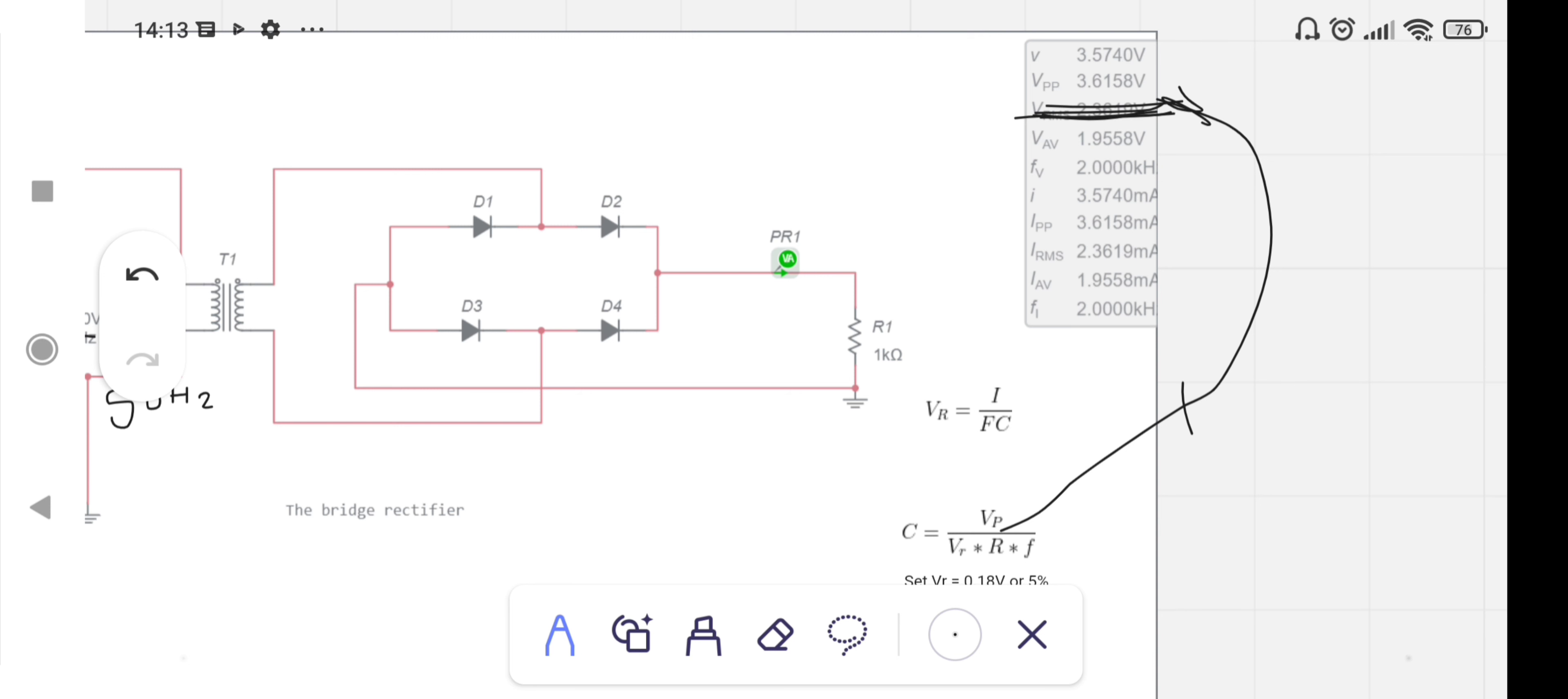VR is set to 0.8 volts, R is 1000 ohms, and F is 50 Hertz. Now with these values, let's simulate.